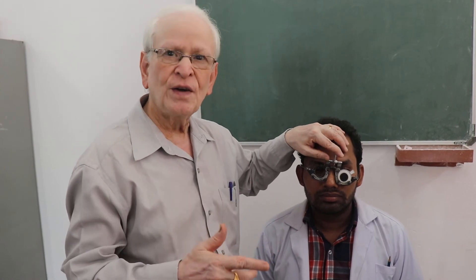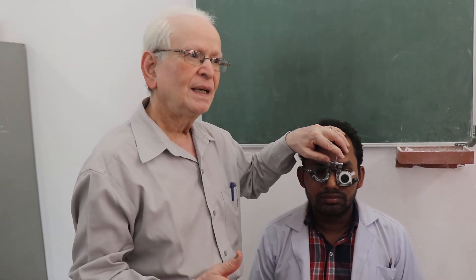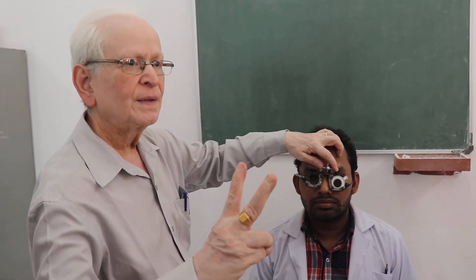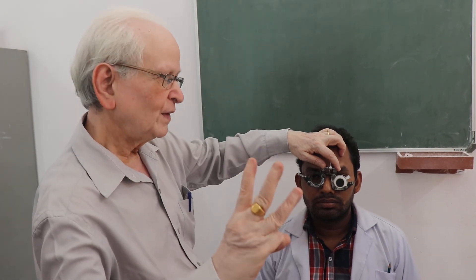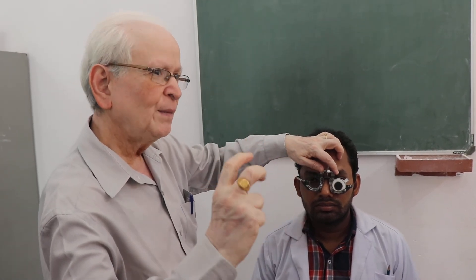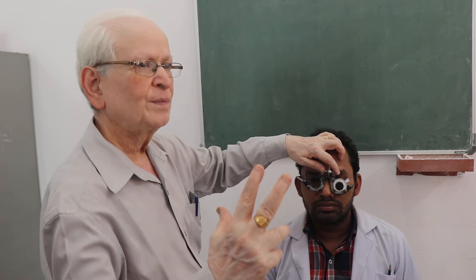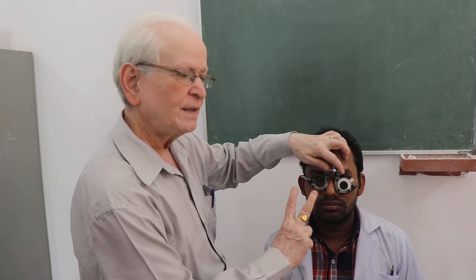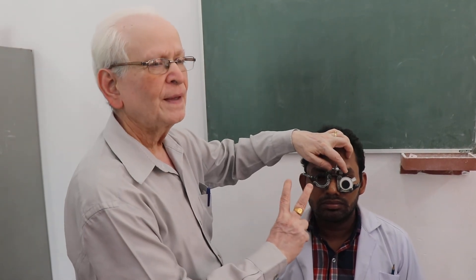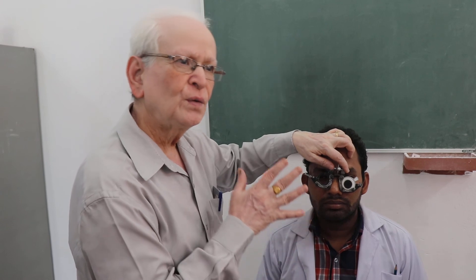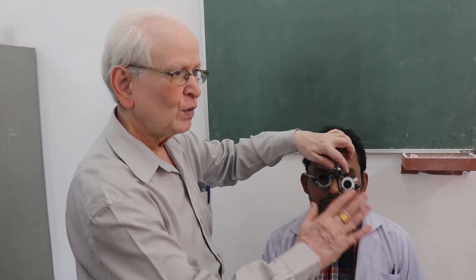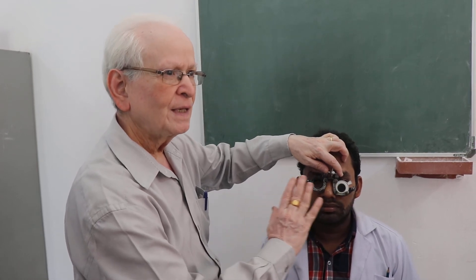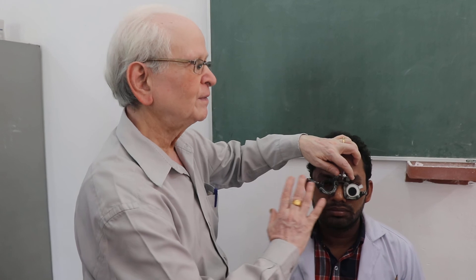If he fails from 1 meter also, then switch over to finger counting. Show fingers irregularly — 2 fingers, 3 fingers, 1 finger — and ask how many fingers are there. This continues from 1 meter close to the face. If the patient is not able to recognize fingers close to the face, switch over to hand movements. Show very slow hand movements; no air should be felt by the patient.